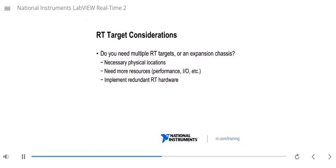Along the same theme, considering do you need more than one RT target or perhaps an expansion chassis? The usual reason for this is going to be channel count. Say you need to read from 4,000 thermocouples. You're probably not going to be able to do that in a single compact RIO chassis. You're probably going to need more resources, more modules, more slots, more processing power, more FPGA space, more PXI horsepower to process all this data.